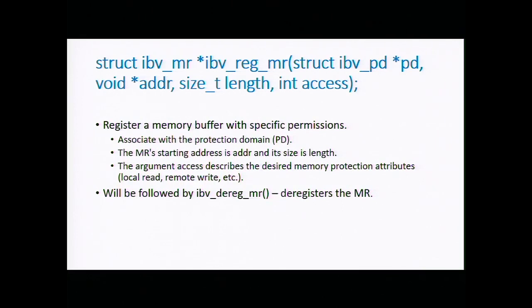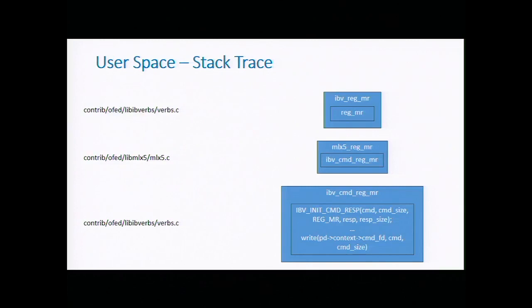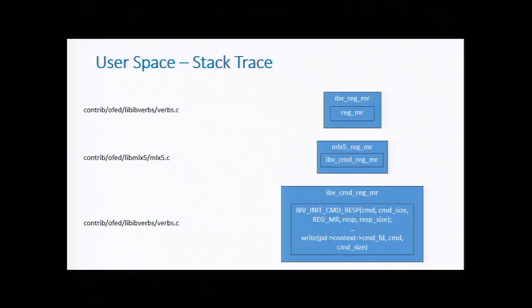Looking at the call trace for ibv_reg_mr: the user application works with libibverbs, which is the API layer. It has a callback called reg_mr that every RDMA user-space provider must implement — for example mlx5_reg_mr — which calls ibv_cmd_reg_mr. This is a callback back to libibverbs that issues a write command to the kernel. The flow goes back and forth between libibverbs and the RDMA provider — in our case mlx5 — making it a generic API from both the user application and kernel code perspectives.